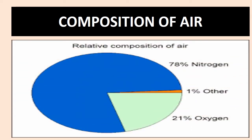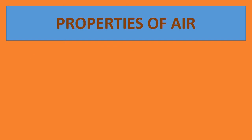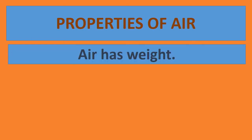Let us discuss the composition of air. Clean air consists of 78% nitrogen, 21% oxygen, and 1% other gases. Carbon dioxide and water vapor are also present. The presence of dust and smoke is also there. The percentage of dust, smoke, and water vapor in the air may vary according to the environment.